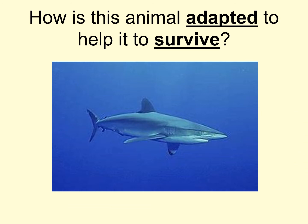Looking at this shark as another example of how an animal is adapted to survive: it's quite camouflaged so it can easily sneak up onto its prey, it's very streamlined which means it can swim fast by cutting through the water and reducing the water resistance, and it's going to have very sharp teeth to catch its prey. With an animal that's very well adapted, it's likely to live longer, therefore have more offspring, and those offspring are likely to have inherited those brilliant adaptations.